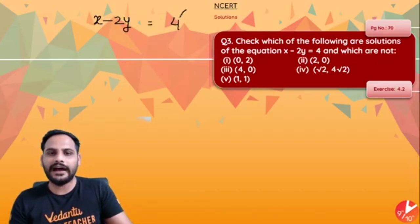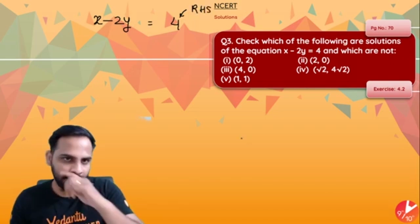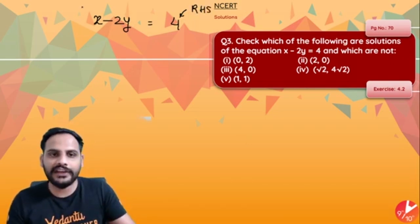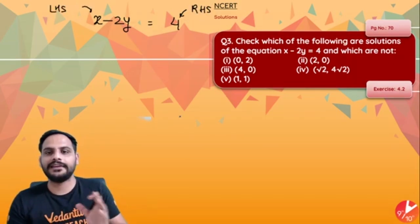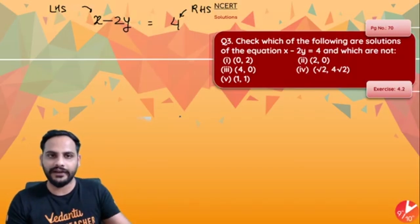You know that RHS is always going to be 4. We need to check for LHS whether LHS is equal to 4 or not for different values of x and y.